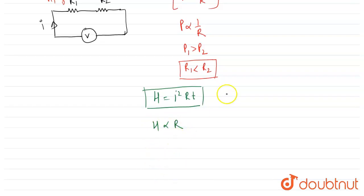So according to that relation, the heat consumed by one is less than heat consumed by two. So from that relation we can say that energy consumed by B is greater than A.